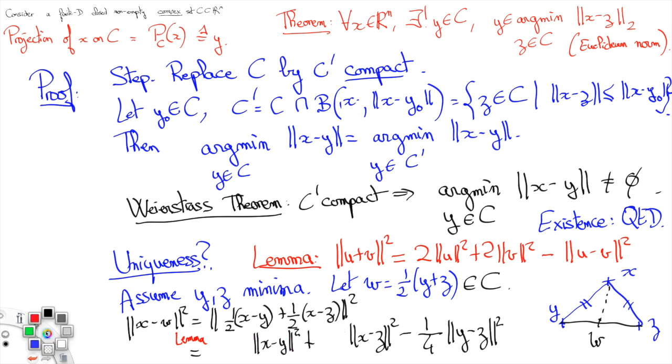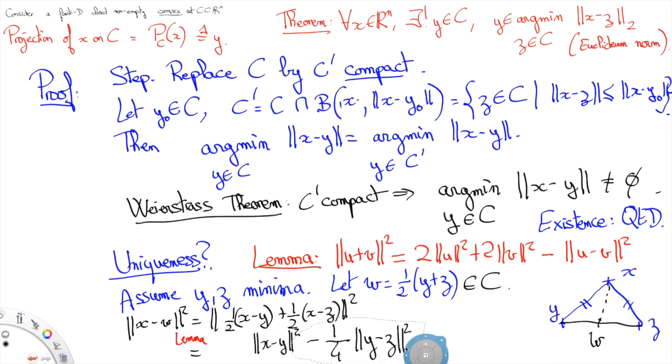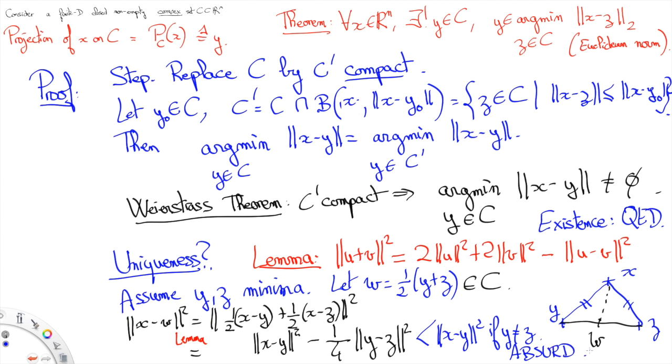If Y is different from Z then this will be strictly smaller than the minimal value X minus Y squared which is absurd. Thus Y is equal to Z, Q.E.D.